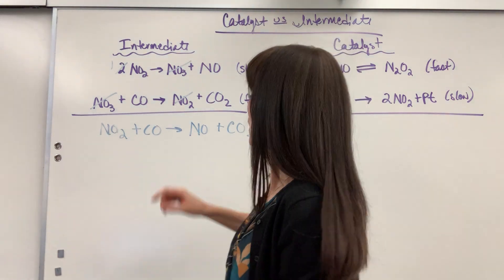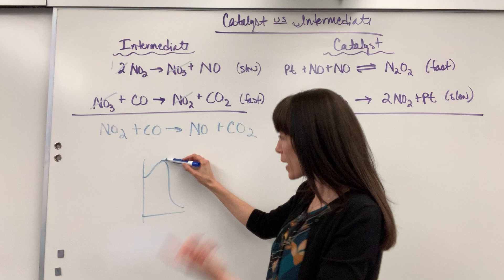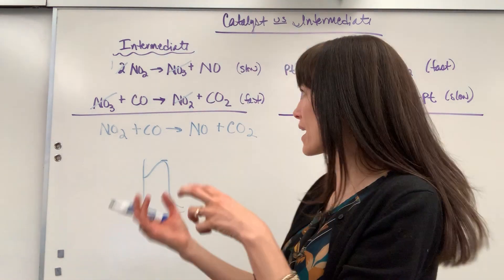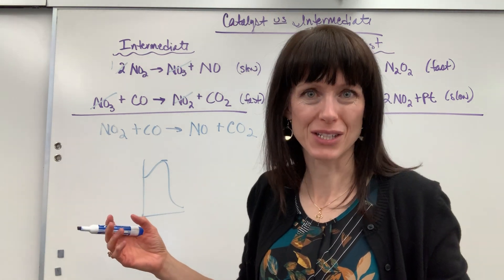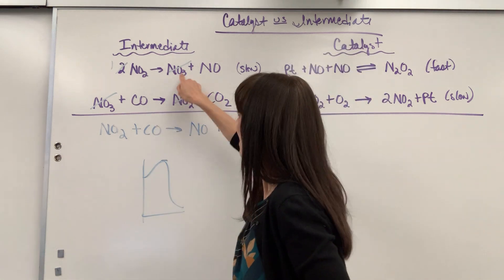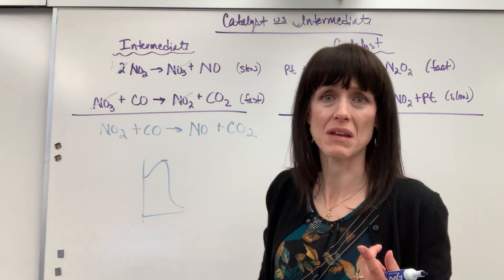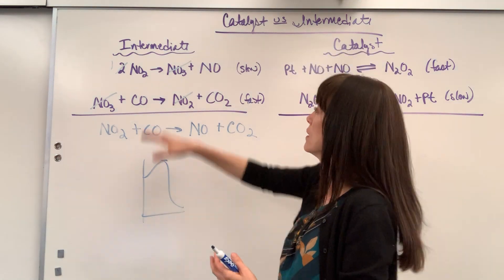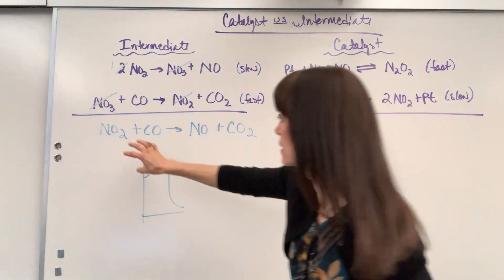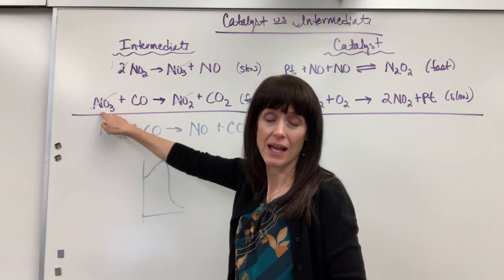This all came from the chemist's imagination. The elementary steps happen at the transition state — from an activation energy diagram where reactants are broken and products are formed. It happens super fast and is really unstable; we can't even collect data from that moment. We don't know how reactants change to products, so we come up with these elementary steps — this reaction mechanism — from our intuition. There's no evidence that an NO3 is produced; the chemist made it up.